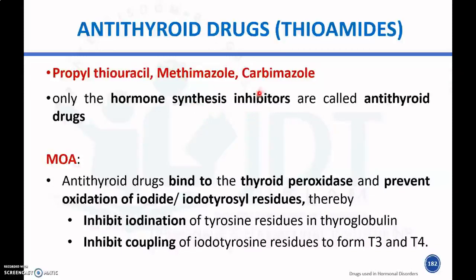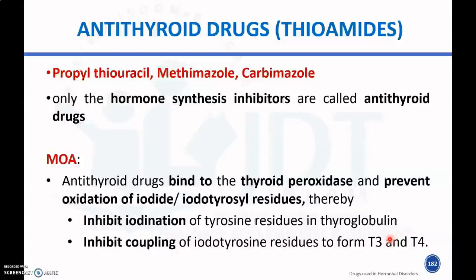The first class is anti-thyroid drugs or hormone synthesis inhibitors: propylthiouracil, methimazole, and carbimazole. Their mechanism of action is to inhibit the synthesis of thyroid hormone by binding to thyroid peroxidase, the enzyme responsible for iodination and coupling. They prevent the oxidation of iodine and iodothyrosine residues, thereby inhibiting iodination of tyrosine residues in thyroglobulin and inhibiting coupling to form T3 and T4.